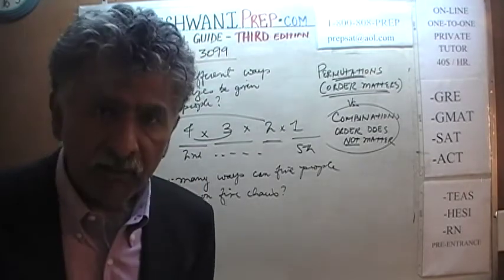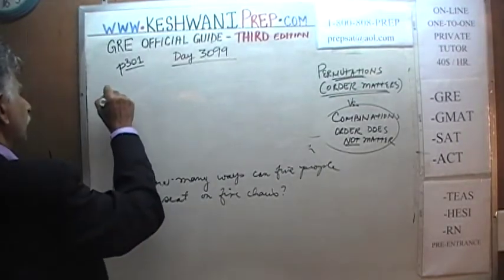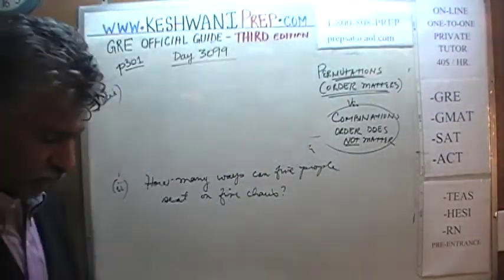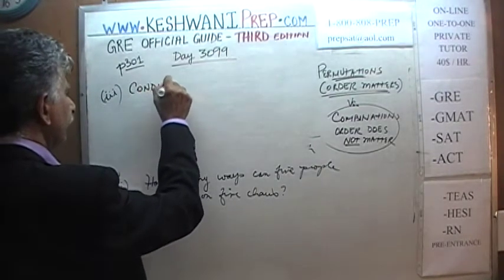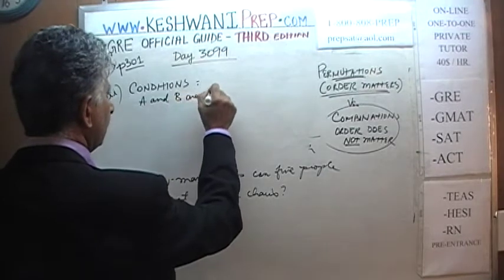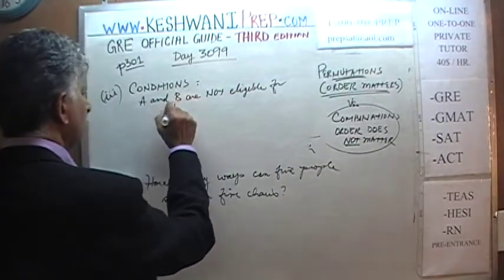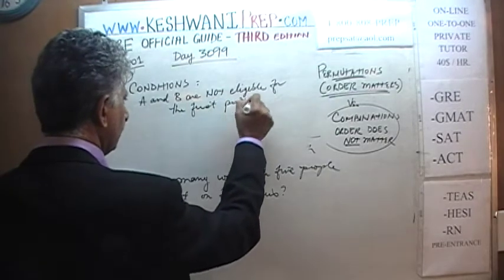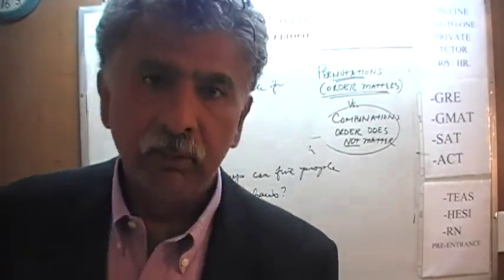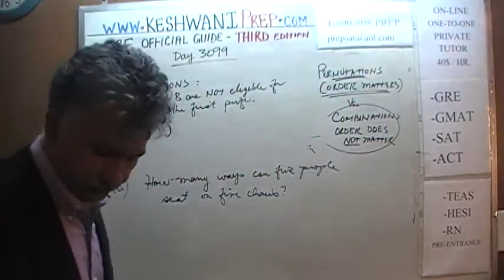Now what happens if you are given certain conditions? For example, what happens instead of simply saying five people on five chairs, if there are conditions we have to observe? Here are the conditions: we are told that A and B are not eligible for the first prize, or neither A nor B can sit in seat number one — only the other three people are allowed to sit there.